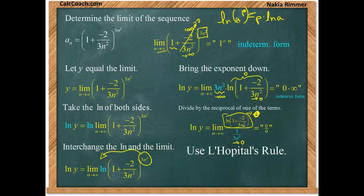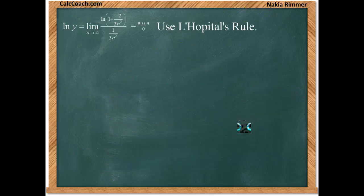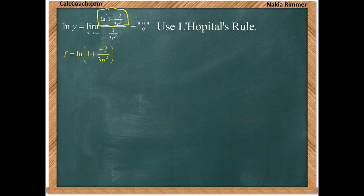We're going to take the numerator derivative and the denominator derivative and trade our limit in for the limit of those divided. Let's take the numerator and deal with its derivative — let's call it f. So what is the derivative of the natural log of one plus negative two over three n squared?